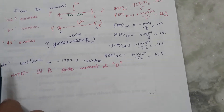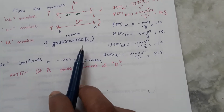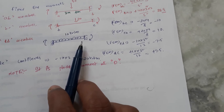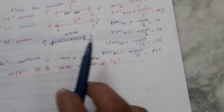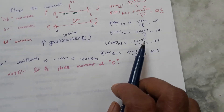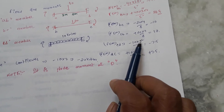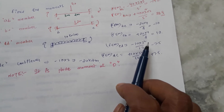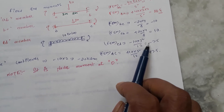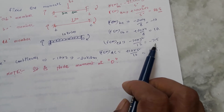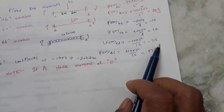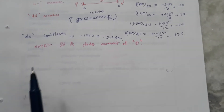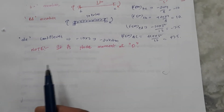Next, for the uniform distributed load of 10 kilonewtons per meter, the fixed end moment formula is w·l² divided by 12, giving minus 7.5 kilonewton-meters.